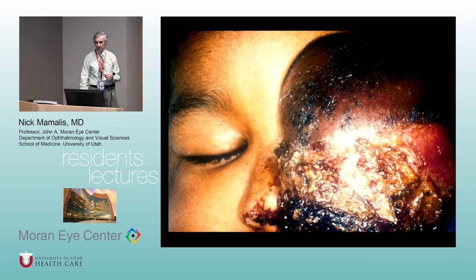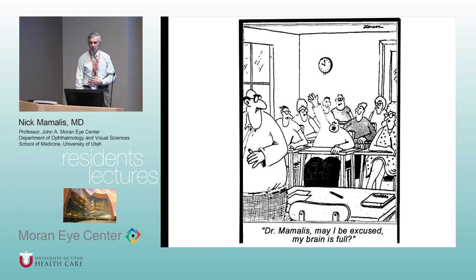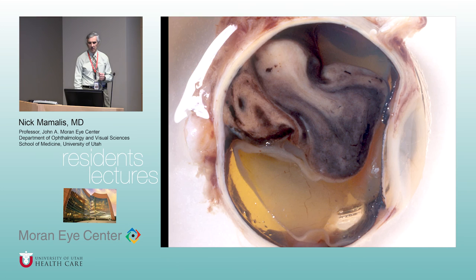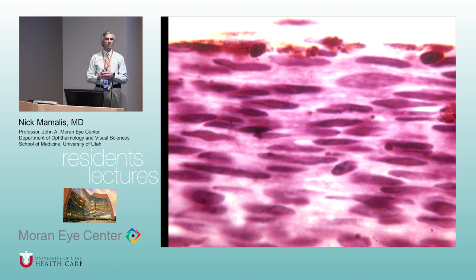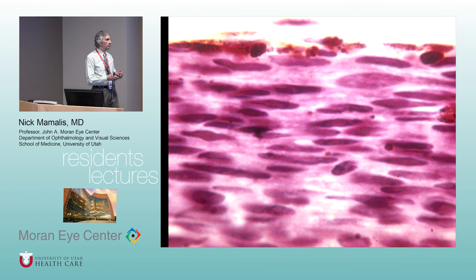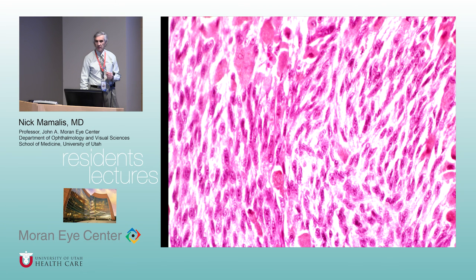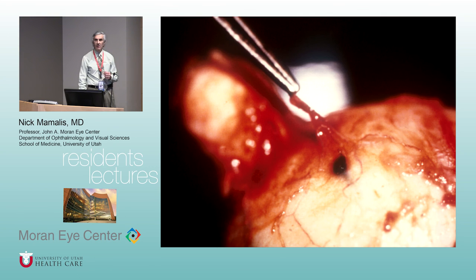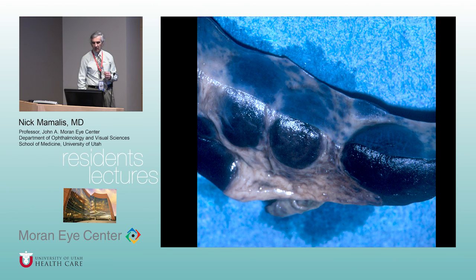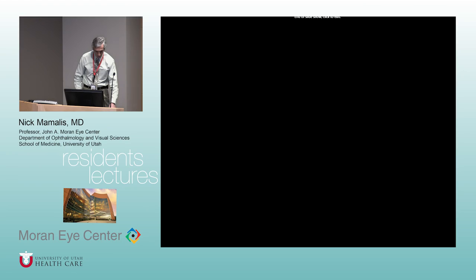Uveal malignant melanomas have a classic mushroom shape. Callender's classification describes spindle A, spindle B, epithelioid, and mixed tumors. They spread via scleral emissaria — through vortex veins — and metastasize to the liver. Good luck on boards.